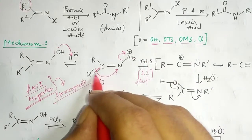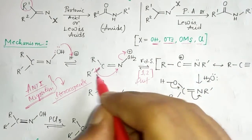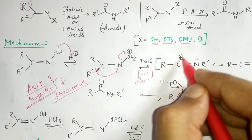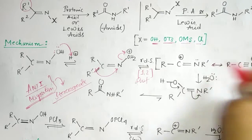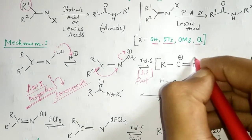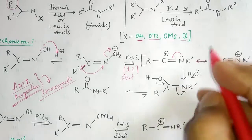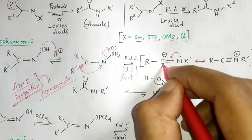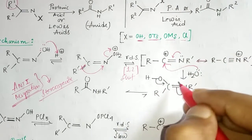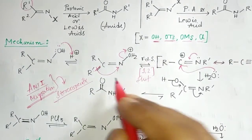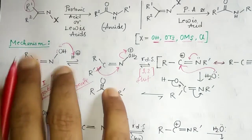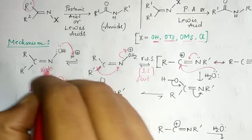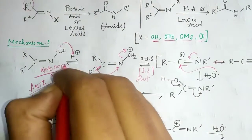After the R group migrates to the nitrogen center, R' is attached to nitrogen and a positive charge develops. Writing the resonating structure, you can see the intermediate. When water attacks and tautomerization occurs, you get the amide product. If X is replaced by OH, the starting material is a ketoxime — the C=N–OH bond is called the oxime part.